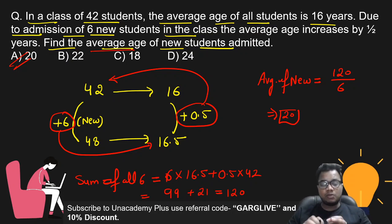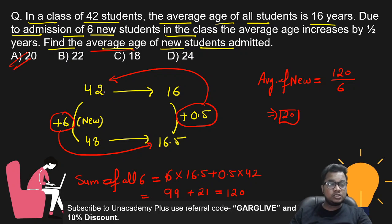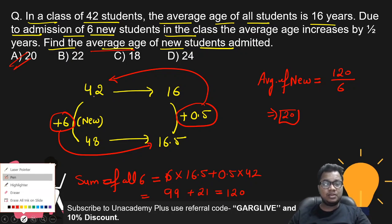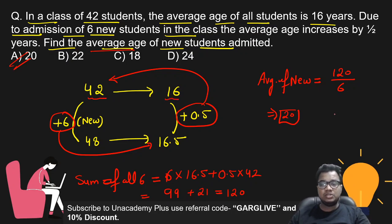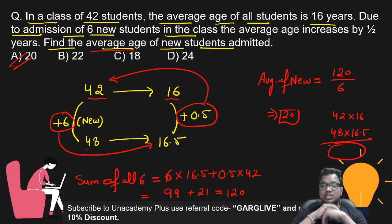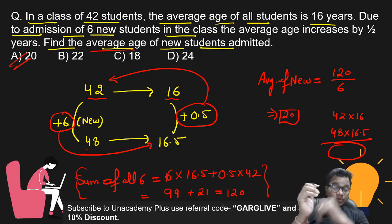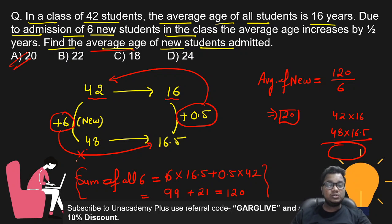This trick is very useful to solve this type of question. If you apply this trick, you can easily find the answer without any difficult calculation. If you solve by the normal method — multiply 42 into 16, then 48 into 16.5, then find the difference — that calculation is very difficult. With this trick, just multiply what you have and the question is done.